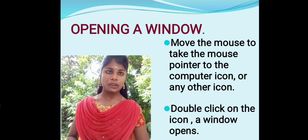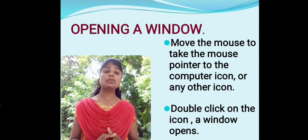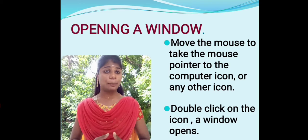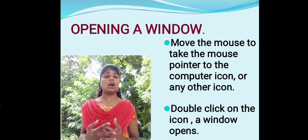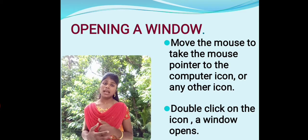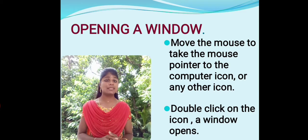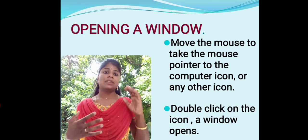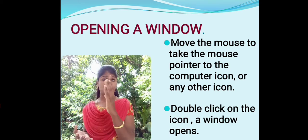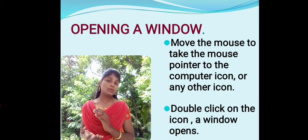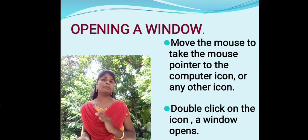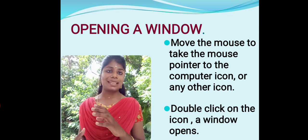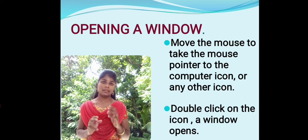So what is the first point? Move the mouse to take the mouse pointer to the computer icon or any other icon. That means you have to move the mouse, and your mouse pointer also moves in the same direction. And then you can select any computer icon.